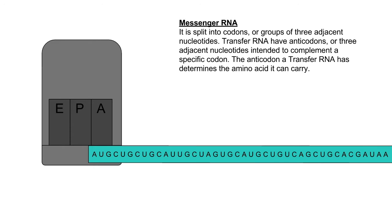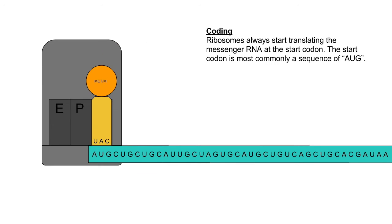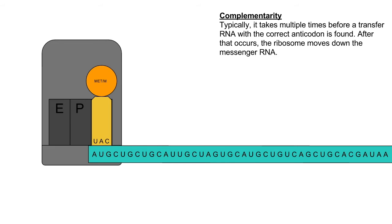Messenger RNA is split into codons, or groups of three adjacent nucleotides. Transfer RNA has anticodons, or groups of three adjacent nucleotides that are complementary to the codons of messenger RNA. The specific anticodon determines which amino acid the tRNA is able to carry. Ribosomes always start translating the messenger RNA at the start codon. The start codon is most commonly a sequence of AUG.